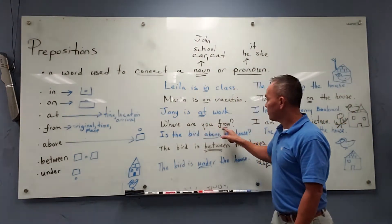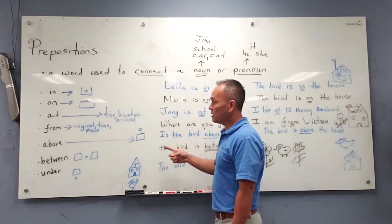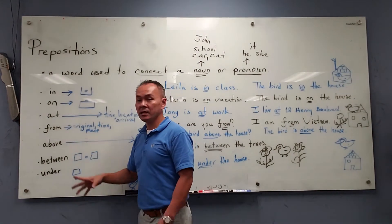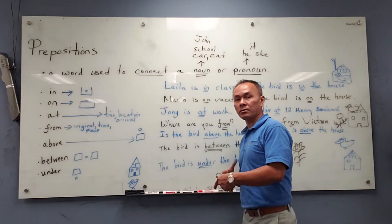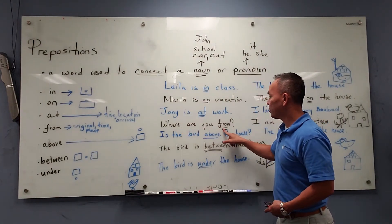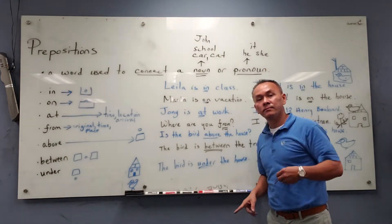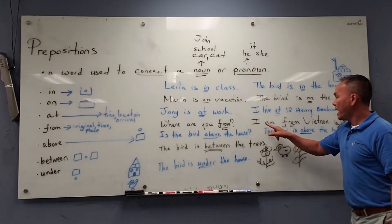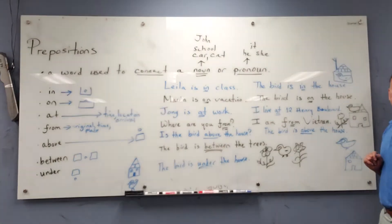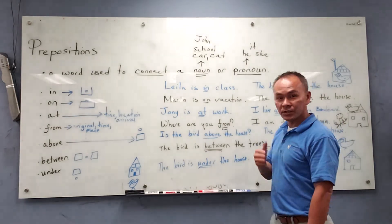Where are you from? From is a preposition. It means the original time or place, or a place of arrival, a place of going to. Where are you from? Where did you buy this from? I am from Vietnam. So, where are you from?